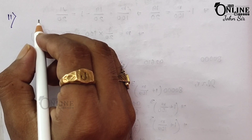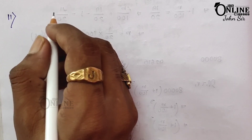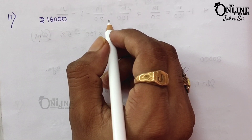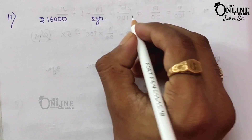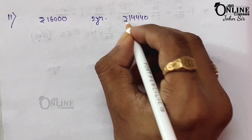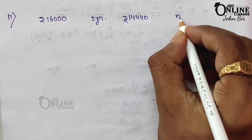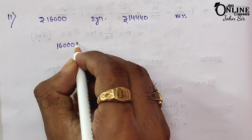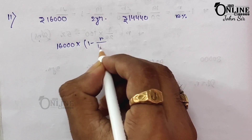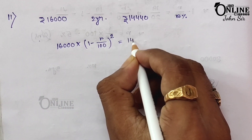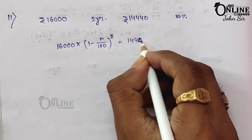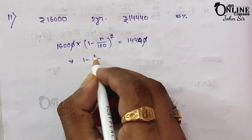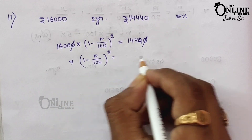Sum number 11: Afzal purchased an old motorbike at rupees 16,000. After 2 years the value will be 14,440. Find the rate of depreciation. Let the rate of depreciation equal r percent. So: 16,000 × (1 − r/100)² = 14,440. Cancelling zeros: (1 − r/100)² = 1440 ÷ 1600.